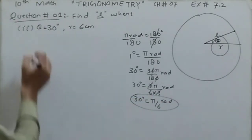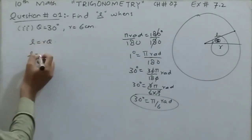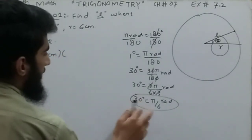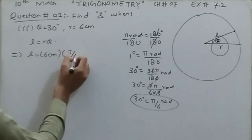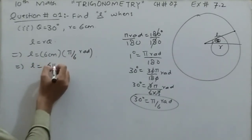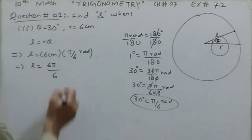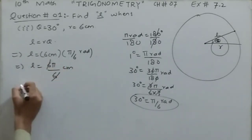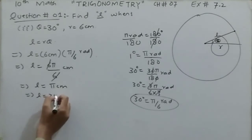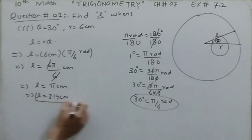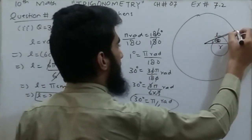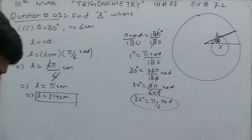This is the conversion. Now using the formula l = r·θ: l = 6 centimeters × π/6 radian. By simplification, 6 multiplied by π divided by 6 — the sixes cancel — and we are left with l = π centimeters. Since π is approximately 3.14, the length l is approximately 3.14 centimeters. This is the length from the center of the circle to the circumference.